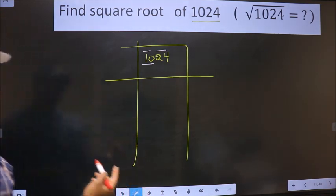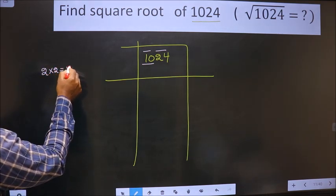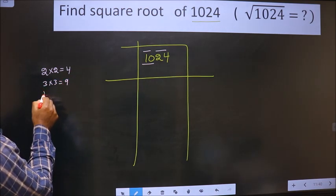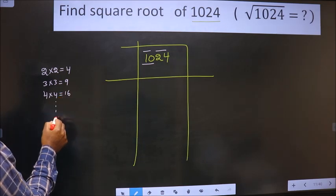And the square numbers are these. That is 2 into 2, 4; 3 into 3, 9; 4 into 4, 16, and it goes on.